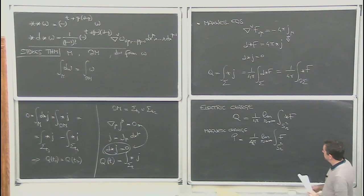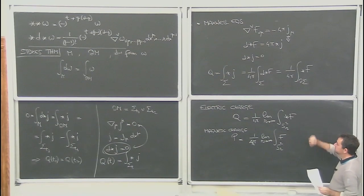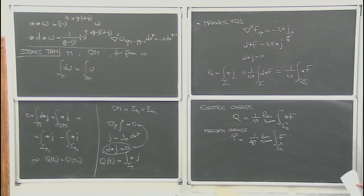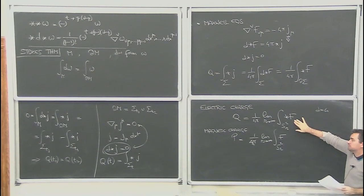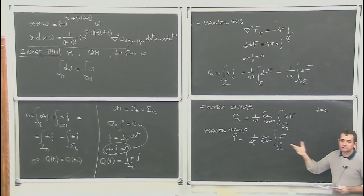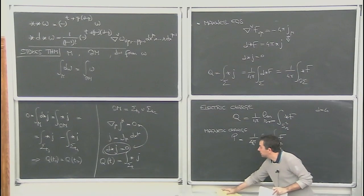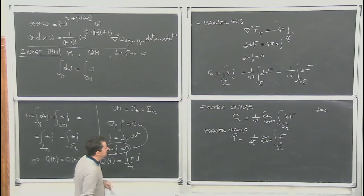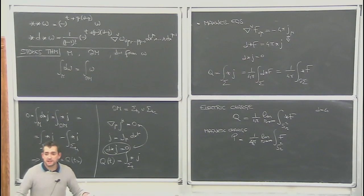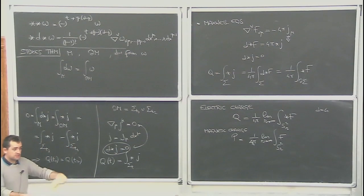Now let's introduce charges associated with space-time itself — the Komar integrals and conserved charges associated with the space-time symmetries. We come back to arbitrary space-time dimension d. Assume we have a Killing vector — a symmetry of the space-time — denoted k. Since the Lie derivative of the metric is zero, it satisfies the Killing equation: nabla_{(mu} k_{nu)} = 0.